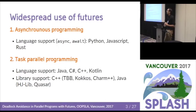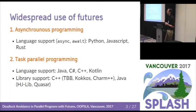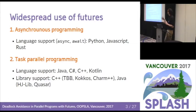Then you have the category of task parallel programming, which is more where our practical focus is, although the model is general and supports both. For task parallel programming you have language-level futures support, but also high-performance computing libraries such as CnC or Intel TBB that are specifically suited for these kinds of irregular parallel programs where you describe data dependencies and explicit parallelism.